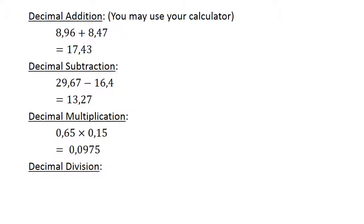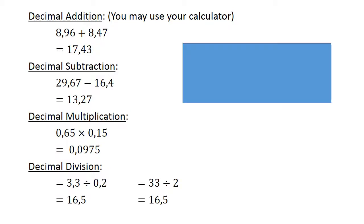Decimal division: 3.3 divided by 0.2. Multiply both by 10 to get whole numbers. 33 divided by 2 equals 16.5.